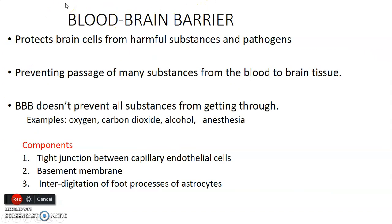The blood-brain barrier protects the brain cells from harmful substances and pathogens — it prevents the passage of substances from blood into the brain tissue. However, it does not prevent all substances from passing through. For example, oxygen, carbon dioxide, some anesthetic agents, and alcohol do pass the blood-brain barrier. So it is a selective barrier that allows some things and prevents others.